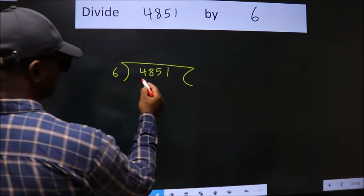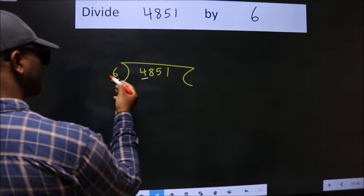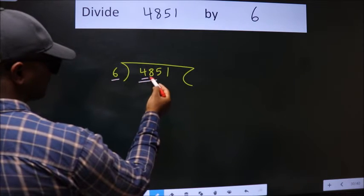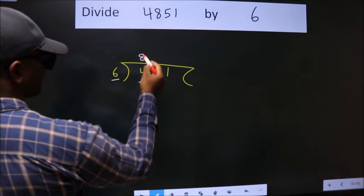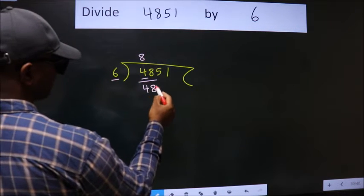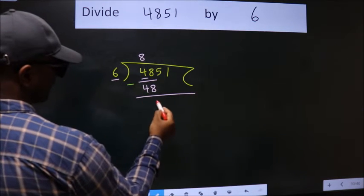Next, here we have 4. Here, 6. 4 is smaller than 6, so we should take two numbers: 48. When do we get 48 in 6 table? 6 times 8 is 48. Now we should subtract. We get 0.